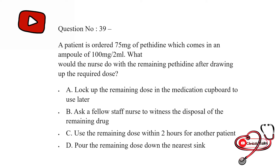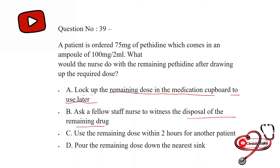The patient is ordered 75 mg of pethidine which comes in an ampoule of 100 mg per 2 ml. What would the nurse do with the remaining pethidine after drawing up the required dose? Option first: lock up the remaining dose in the medication cupboard to use later; second: ask a fellow staff nurse to witness the disposal of the remaining drug; third: use the remaining dose within 2 hours for another patient; last: pour the remaining dose down the nearest sink. The correct answer is B — ask a fellow staff nurse to witness the disposal of the remaining drug.